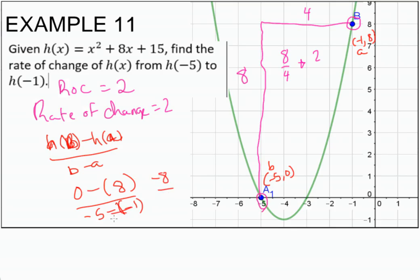0 minus 8 is negative 8, negative 5 plus 1 is negative 4, and as you see, we get 2 yet again. So there's 2 ways that we can do this problem.